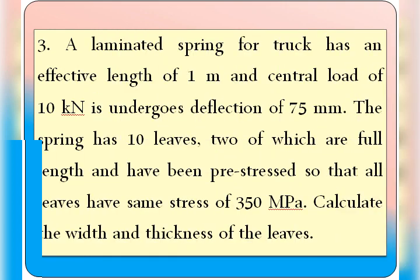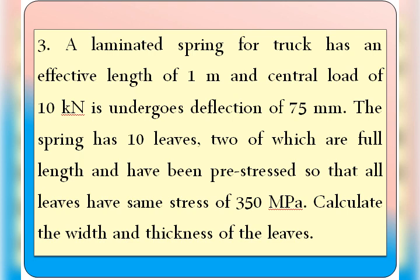The question statement is: a laminated spring for a truck has an effective length of 1 meter, a central load of 10 kilo Newton, and undergoes deflection of 75 mm. The spring has 10 leaves, two of which are full length and have been pre-stressed so that all leaves have the same stress of 350 mega Pascal. Calculate the width and thickness of the leaves.